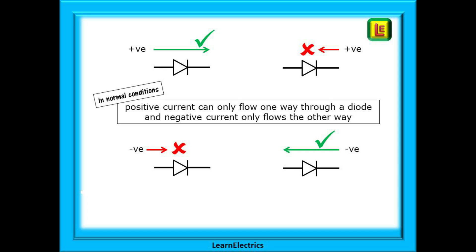The diodes we are using here act as a one-way street where a positive current can only flow one way through a diode and negative current can only flow in the other direction.